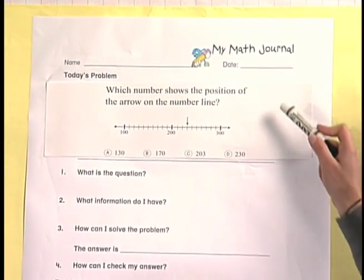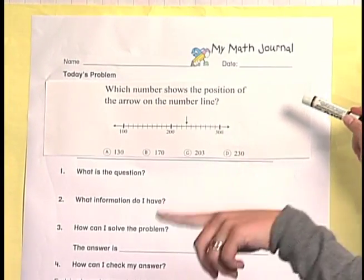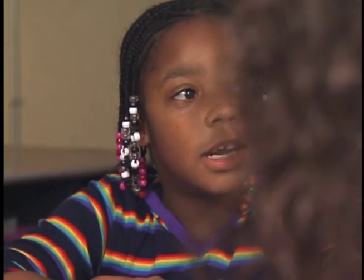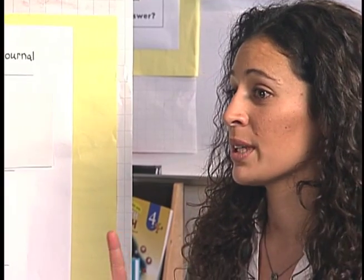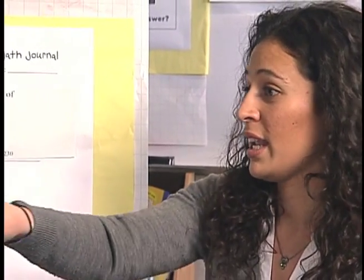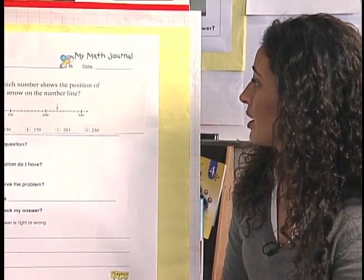Can I have a volunteer read the question? Jeanette, how about you read the question? Which number shows the position of the arrow on the number line? Can I have one more person reread the question? Benny? Which number shows the position of the arrow on the number line? Okay. Does everyone understand the question? Yes.